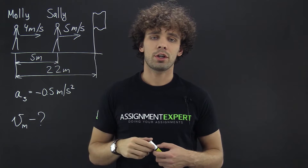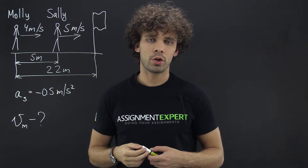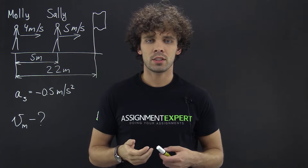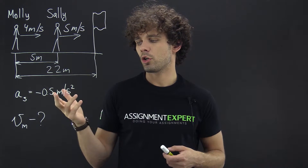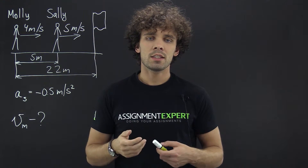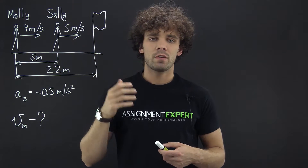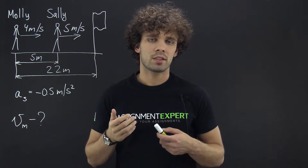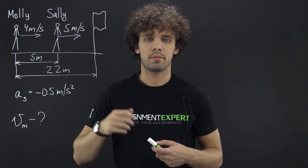Sally thinks it's an easy win for her, so she decides to run the rest of the race with a constant deceleration of 0.5 meters per second squared. We need to find the speed of Molly when she reaches the finish line, if she decides to accelerate and finish at the same time as Sally.